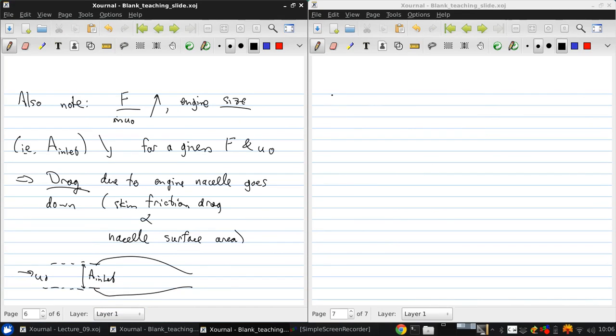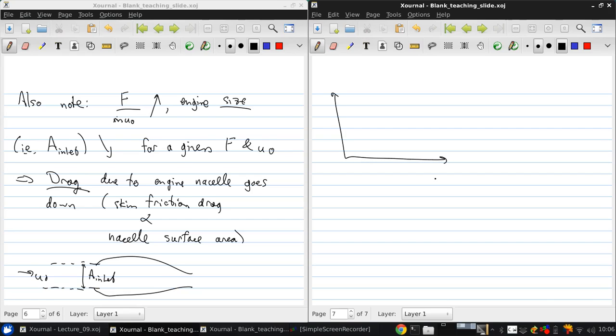Now you'll discuss this more in class, but essentially you get a curve that looks like this. This is f over m dot u0 versus propulsive efficiency, and basically there's a curve that looks like that, where ue over u0 increasing is moving down the curve and to the right. Now where a given engine design will end up on this curve depends on the mission of the aircraft it's to be used for, and we'll talk more about missions and how they affect aircraft design in a couple of weeks.